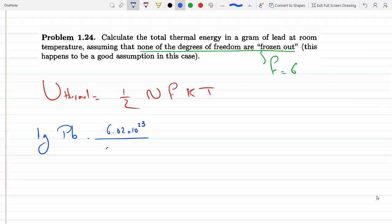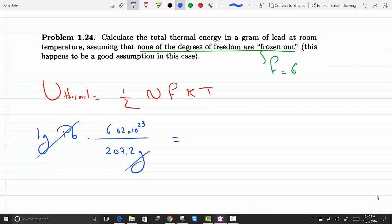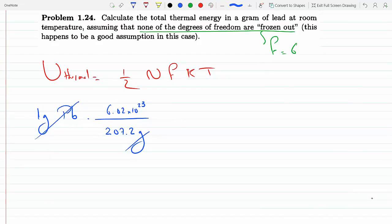207.2 grams. So then U_thermal, I'm gonna plug that in as a fraction: half 6.02 times 10 to the 23 over 207.2 grams times the degrees of freedom. So this whole thing is n and f is six.